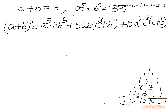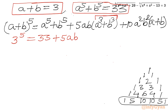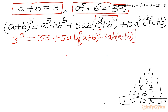Now we have two known equations: a + b = 3 and a⁵ + b⁵ = 33. Let us apply: 3⁵ = 33 + 5ab times (a³ + b³). We can expand a³ + b³ using the algebraic identity: (a + b)³ − 3ab(a + b). Plus 10 times (a + b) times a²b², with a + b = 3, giving 30a²b².